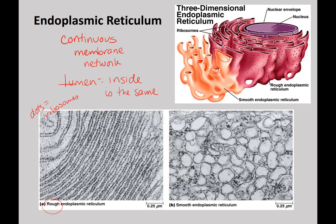The smooth ER appears more tubular with distinct tubes, partly because these are going to pinch off, become vesicles, and transport lipids elsewhere. One thing to understand is that smooth ER can become rough ER and rough ER can become smooth ER. The loss of ribosomes makes the rough ER smooth, and the addition of ribosomes makes the smooth ER rough. Depending on what the cell needs to do, it regulates the percentage of ER that is rough versus smooth.